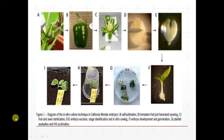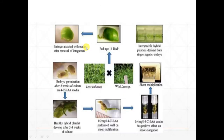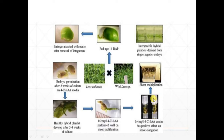In this diagram, the embryo lens cloneris and a wild species are crossed. At 14 days post-pour, the embryo attached to the ovules is removed from the integument. After two weeks, the embryo germinates, is cultured, and after germination, a healthy haploid plantlet develops after three to four weeks of culture. The culture media is IAA media; then shoot hormone is added for shoot regeneration, and root hormone is added for root elongation. Finally, an interspecific hybrid plantlet is derived from a single zygotic embryo.